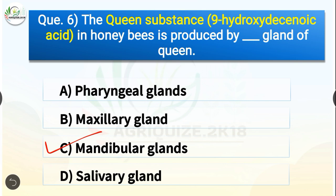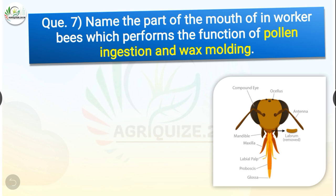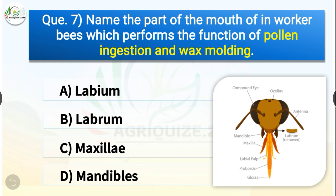Question number seven: Name the part of the mouth of worker bees which performs the function of pollen ingestion and wax molding. The options are labium, labrum, maxillary, or mandibles. The correct answer is option D — mandibles. Mandibles is the part of the mouth of worker bees which performs the function of pollen ingestion and wax molding.